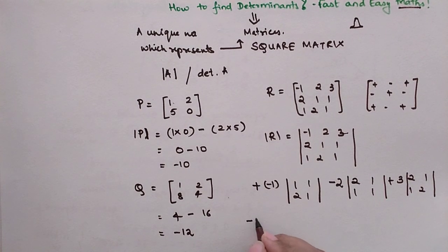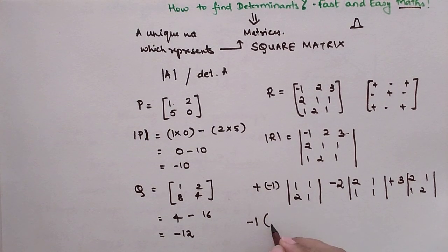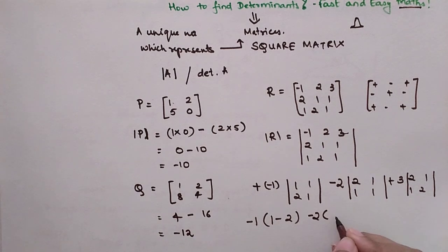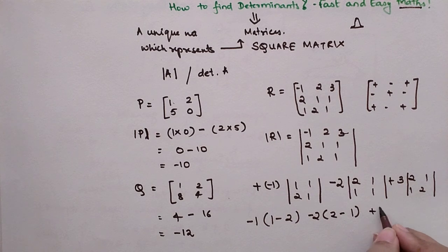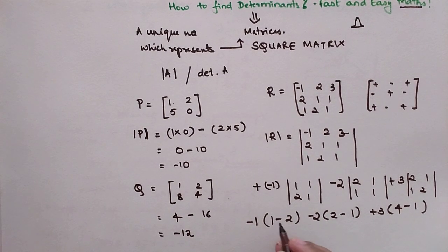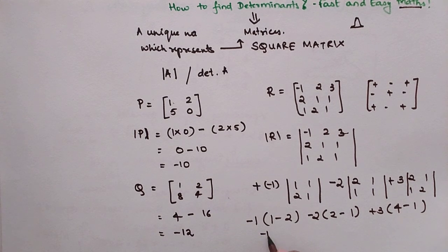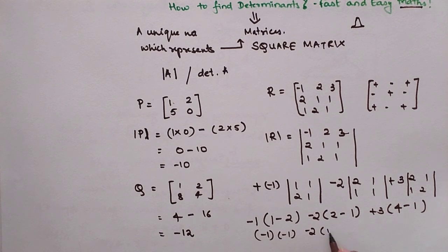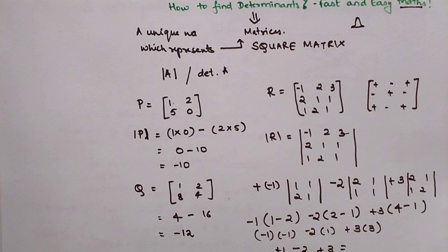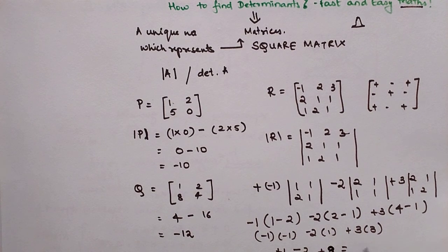Now computing: (−1)×(1×1 − 2×1) = (−1)×(1−2) = (−1)×(−1) = 1. Then (−2)×(2×1 − 1×1) = (−2)×(2−1) = −2. Then (+3)×(2×2 − 1×1) = 3×(4−1) = 3×3 = 9. So the determinant = 1 − 2 + 9 = 8.